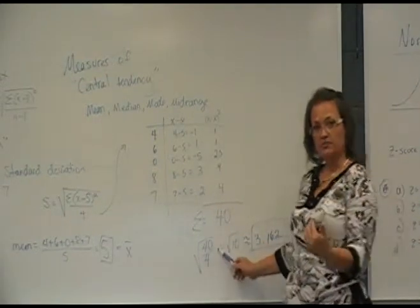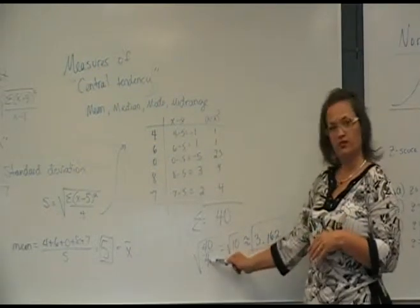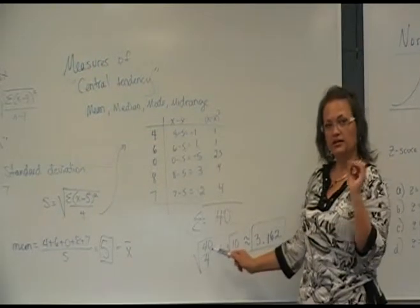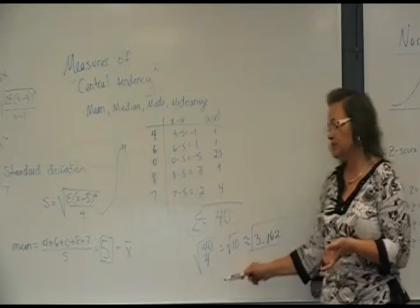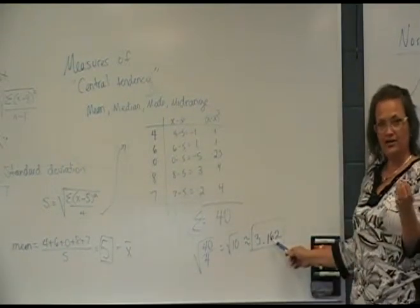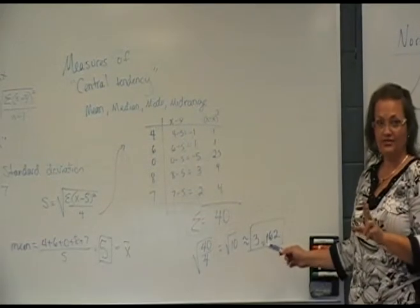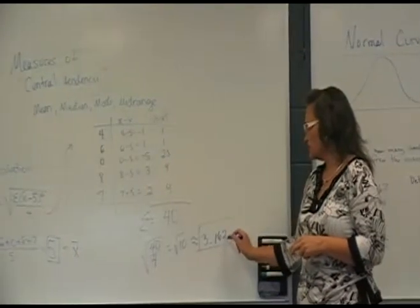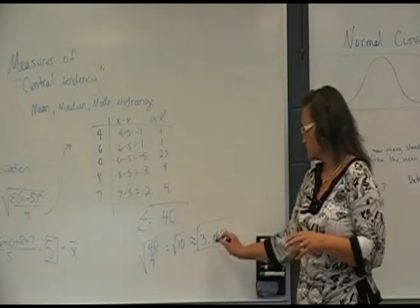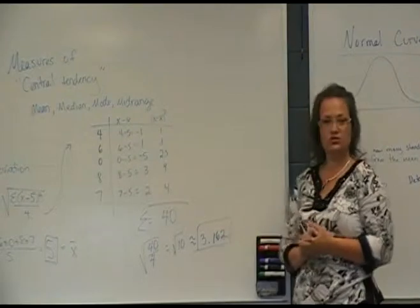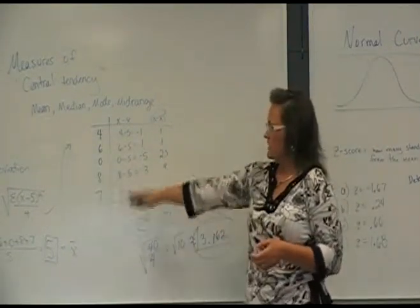The formula says divide by n minus 1, which we determined is 4. So 40 divided by 4 is 10. And the last step — remember we save the square root for last — the square root of 10. It doesn't come out exactly to an integer, so we do have to round it. It says to round to the thousandths place, so that's three places back: 3.162 to the nearest thousandths. So this is the standard deviation of that set of data.